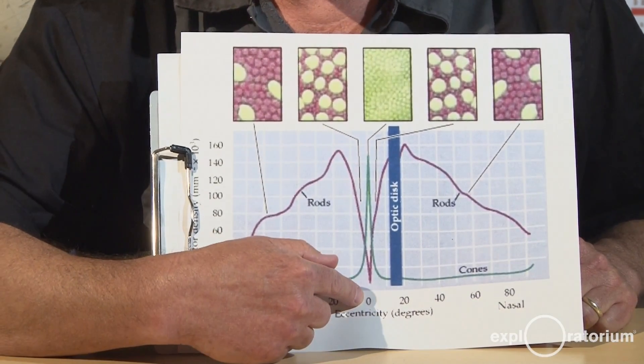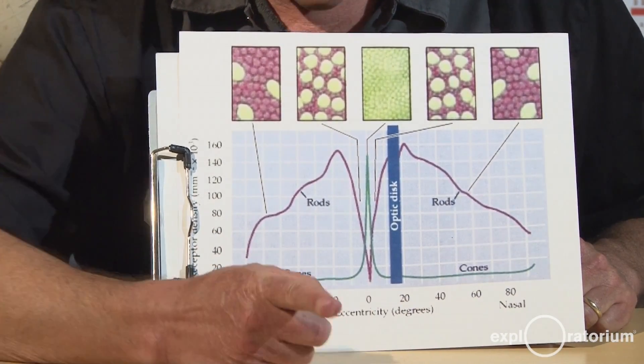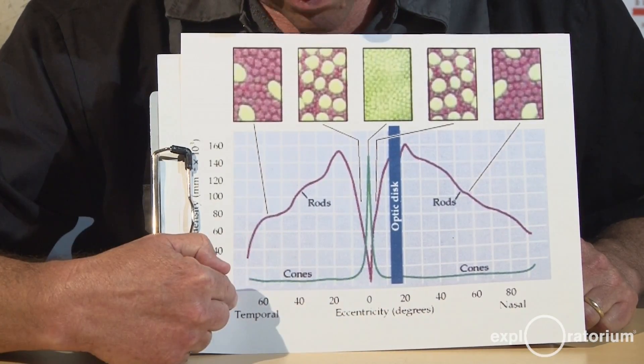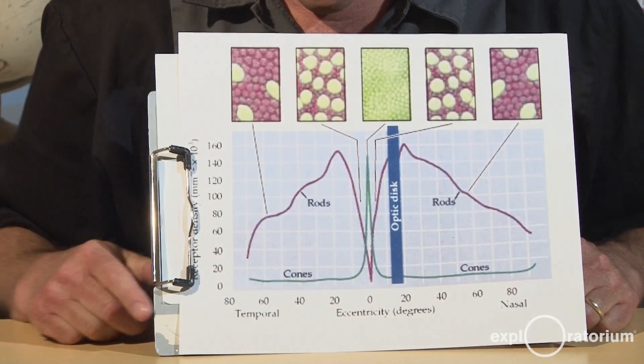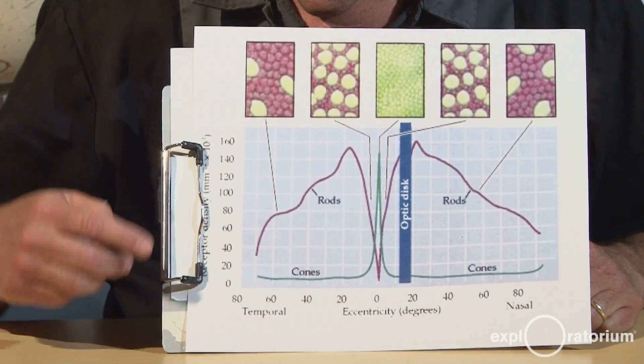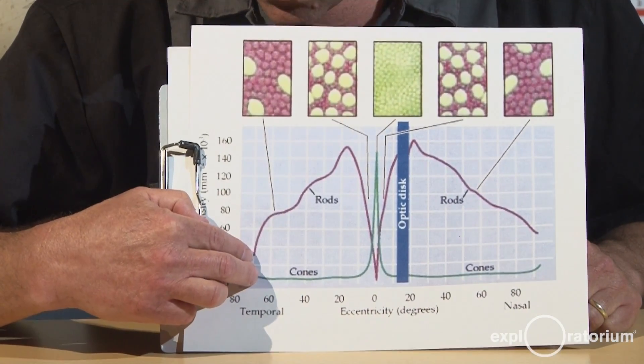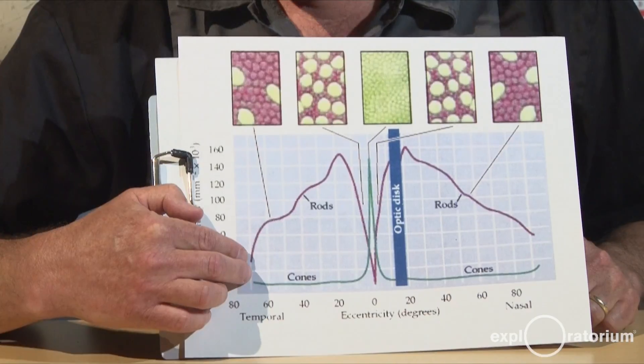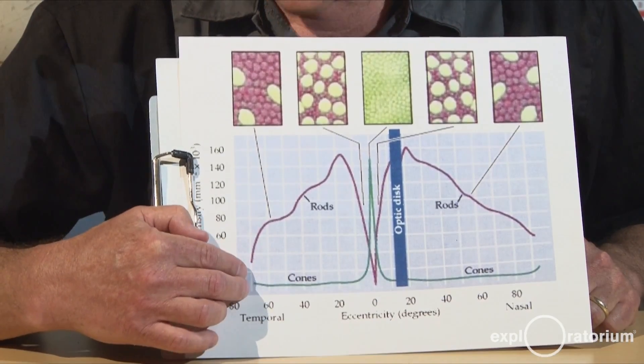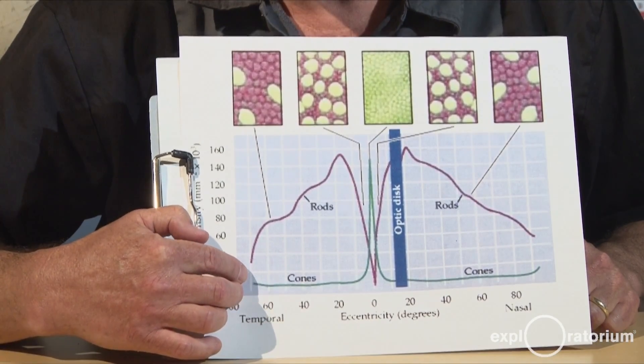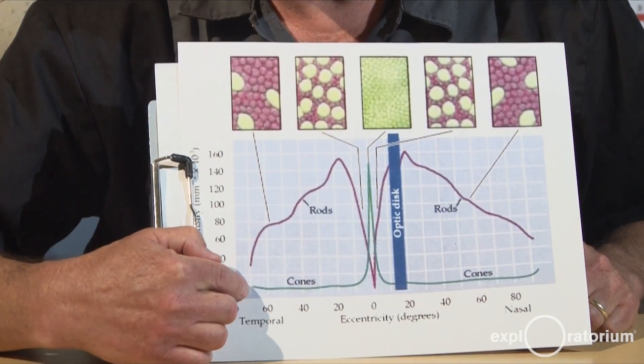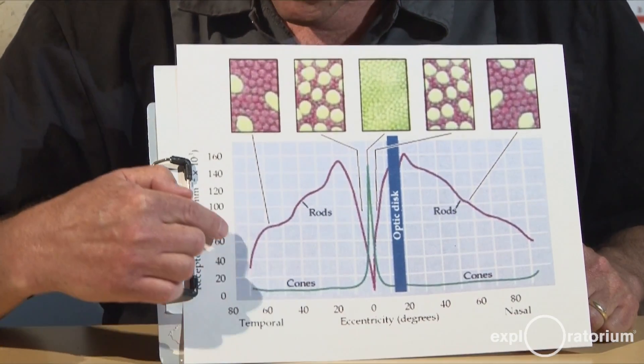Right in the very center is where you're looking straight on. Off over here on these edges, this is when the light is coming in from the side. If you notice, over here the number of rods and cones are very low. So you don't see much, but the rod number starts going up rapidly, but the cone number doesn't for quite some time.